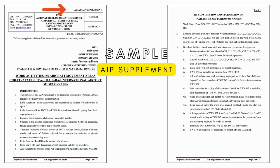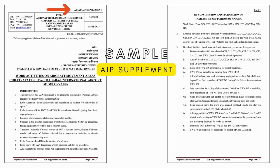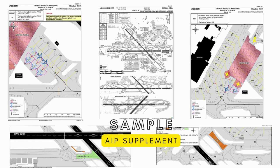Let's understand this with an example. This is an AIP supplement for Mumbai Airport. Each AIP supplement is allocated a consecutive serial number based on the calendar year. AIP supplement number 142 of 2023, validity: November 2nd 2023 0430 UTC to May 16th 2024 1230 UTC — work activities on aircraft movement areas at Mumbai International Airport. This informs concerned users about closure of certain taxiway or runway portions and non-availability of certain facilities during the mentioned period.